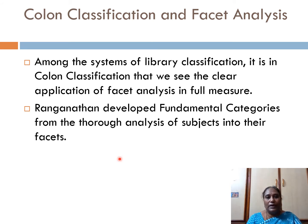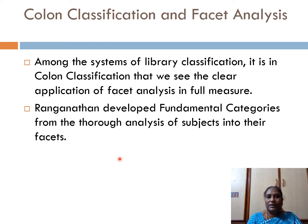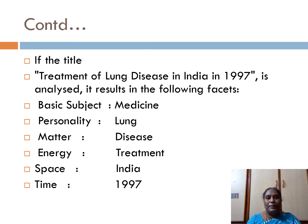Ranganathan developed fundamental categories from the thorough analysis of subjects into their facets. He developed five fundamental categories: Personality, Matter, Energy, Space, and Time (PMEST). Coming to the example, according to colon classification, we are analyzing the facets of this title: Treatment of Lung Disease in India in 1997.